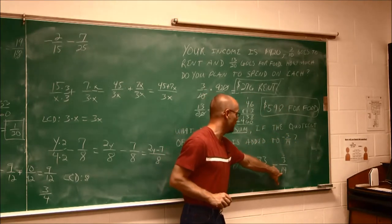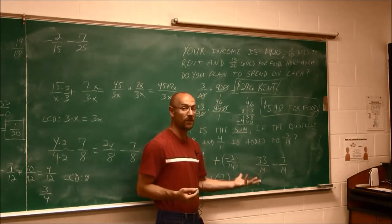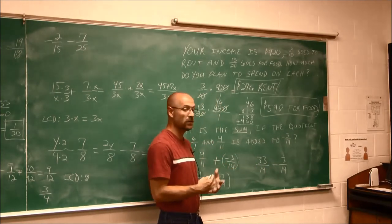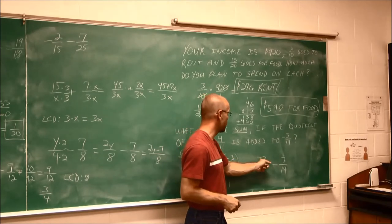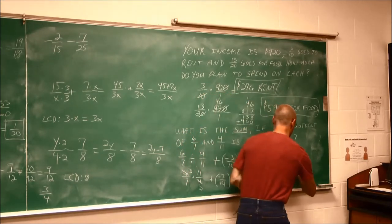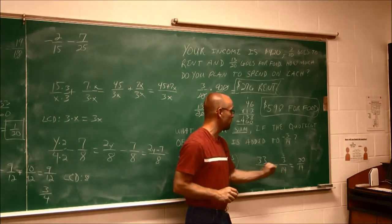Well, we look and we say, hey, it's our lucky day because we have the same denominator. So I can just do the subtraction of the numerators. 33 minus 3 is 30 over that common denominator of 14.